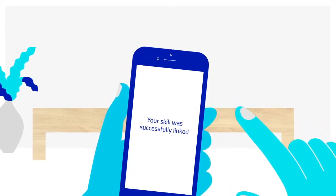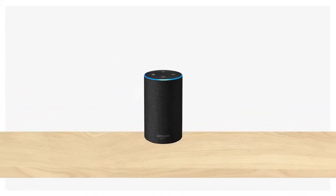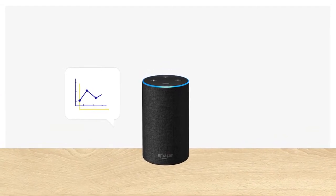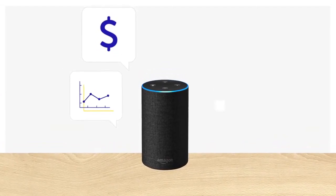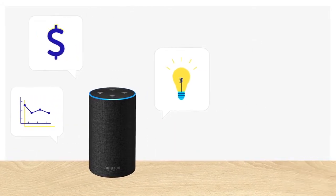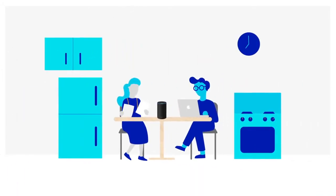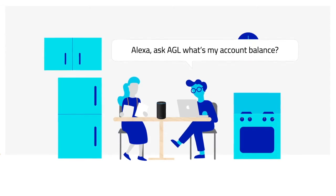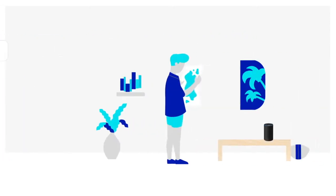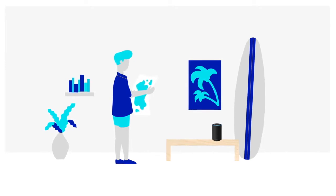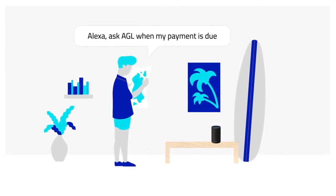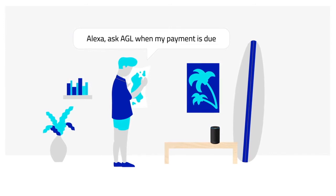Once registered, you won't need to log in again. Now, with the AGL skill, you can get certain information on your account simply by saying, 'Alexa, ask AGL.' Wondering what your energy costs are? Say, 'Alexa, ask AGL what's my account balance?' Going on holiday and want to make sure you don't miss paying your bill? Say, 'Alexa, ask AGL when my payment is due.'